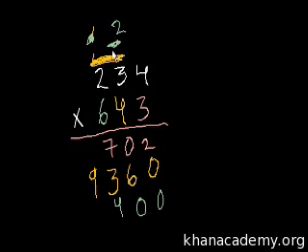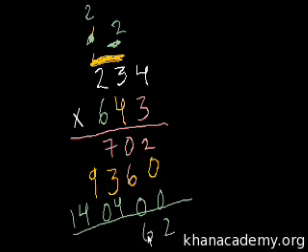We continue with 2 times 3, which is 6, and 2 times 2, which gives us 4. Finally, we add all these together: 234 multiplied by 643 equals 150,462.